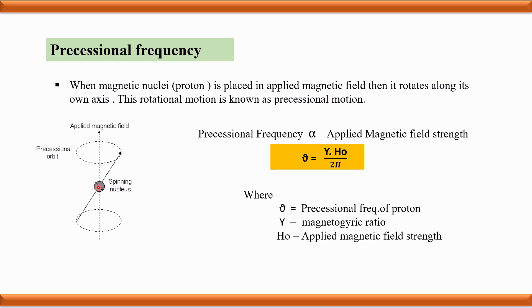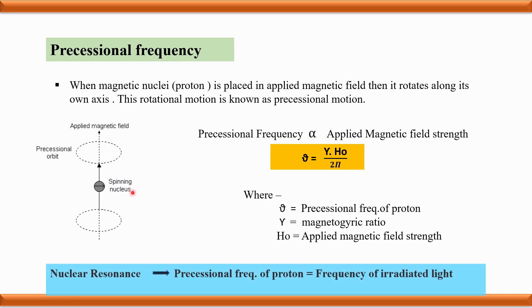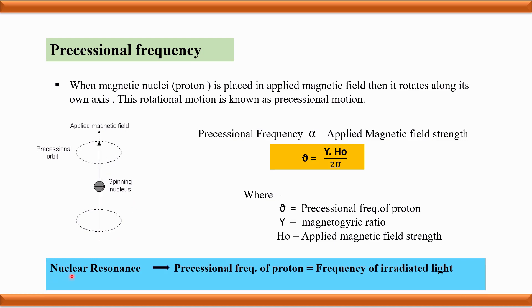When the precessional frequency of the magnetic nucleus, in this case the proton, becomes equal to the frequency of irradiated electromagnetic radiation, the nucleus is said to be in resonance. This is the nuclear resonance condition.